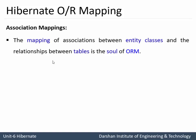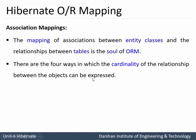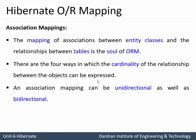Next is Association Mapping. The mapping of association between entity classes — that is our Java class — and relationships between tables — that is our database or RDBMS table — is the soul of ORM. So ORM handles mapping between Java objects and RDBMS tables. There are four ways in which the cardinality of the relationship between objects can be expressed. The association mapping can be unidirectional as well as bidirectional.